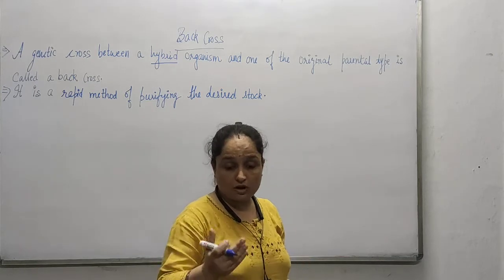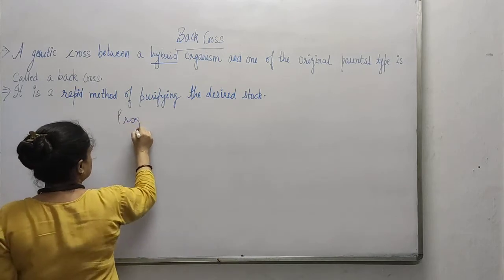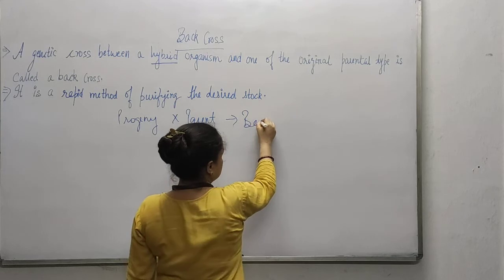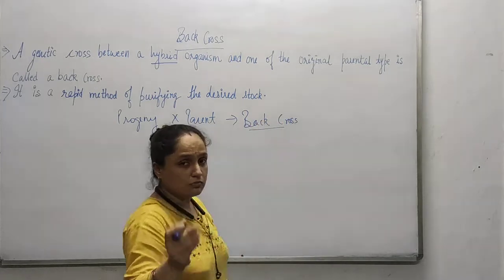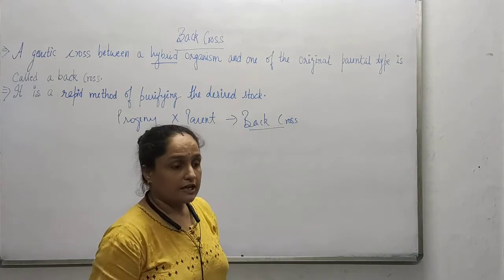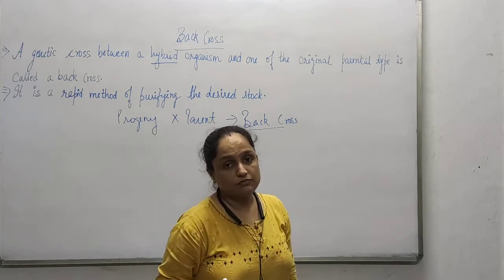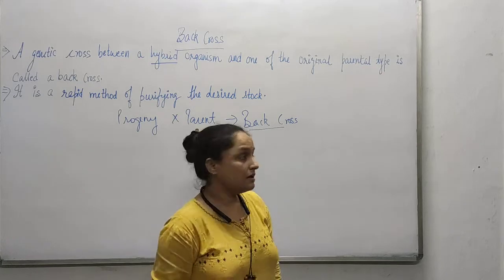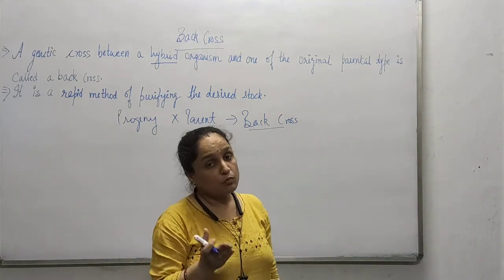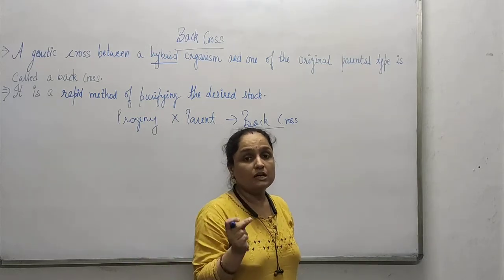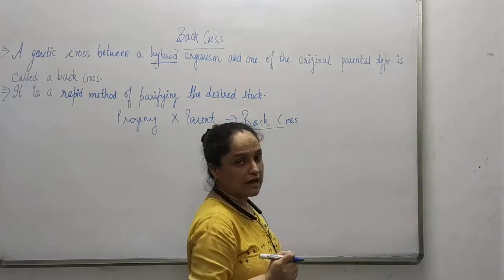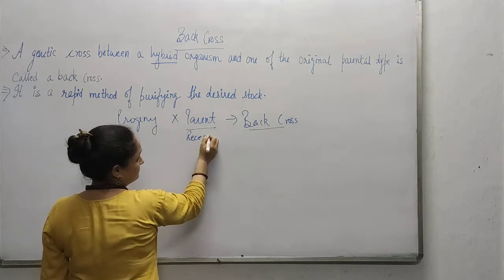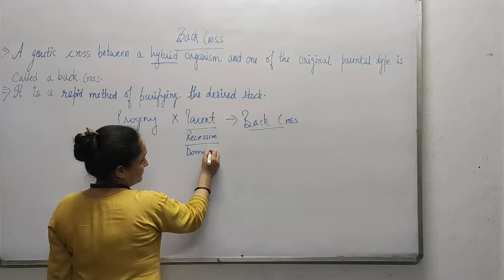When you do this back cross — the cross between the progeny and the parent — one more important thing: whatever test cross you have done, in that test cross you crossed the F1 progeny with the recessive parent, and that also comes under the back cross. So all test crosses can be considered as a back cross, but all back crosses are not test crosses. Why? Because in a test cross we cross the F1 hybrid with only the recessive parent, whereas in a back cross we can cross with any of the parents — that parent may be recessive or it may be dominant.